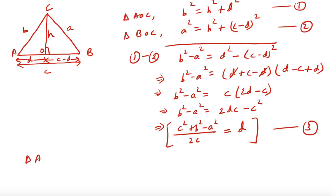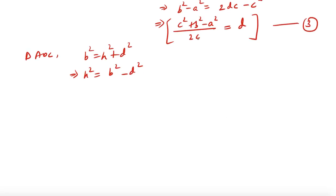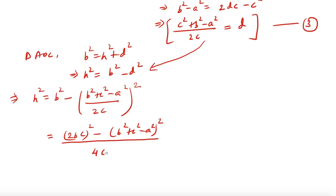Now consider triangle AOC again. We have B squared equals H squared plus D squared, so H squared equals B squared minus D squared. We now substitute the value of D from equation three. So H squared equals B squared minus (B squared plus C squared minus A squared) divided by 2C, whole squared. Rearranging this gives us: H squared equals (2BC) whole squared minus (B squared plus C squared minus A squared) whole squared, all divided by 4C squared.